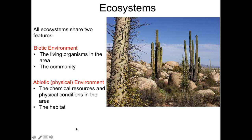Ecosystems are all going to share two components. They're all going to have the biotic environment — that is all of the living organisms, whether they're plants, fungi, bacteria, or animals. If they're living, they're part of the biotic environment. It will also include the abiotic environment, or the physical components. These are the things that constitute the habitat: the rocks, the water, the circulation of air, and aspects of climate such as temperature and precipitation.